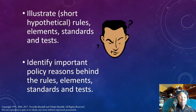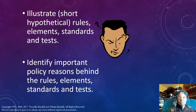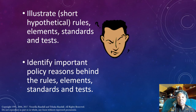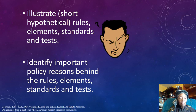You want to illustrate rules, elements, standards, and tests — especially concepts you're having difficulty with — using short hypotheticals. Finally, you want to identify important policy reasons behind the rules, elements, standards, and tests, because it's the policy reasons that will bump a C-plus or B-plus paper into an A paper. When you get into your analysis and discuss how applying or not applying a rule in a particular way meets some policy objective, that's a high-level paper.